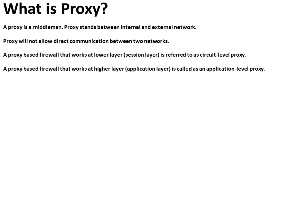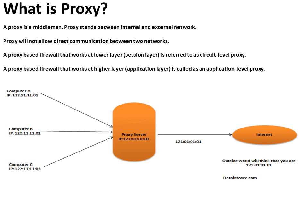A proxy is a middleman — it stands between the internal and external network. A proxy-based firewall that works at a lower layer, that is the session layer, is referred to as a circuit layer proxy, whereas a proxy-based firewall that works at a higher level is called an application layer proxy. For example, if computer A wants to connect to the outside world, it requests the proxy server to connect on its behalf. The outside world will see only the proxy server's IP address, so computer A's IP address is not exposed.